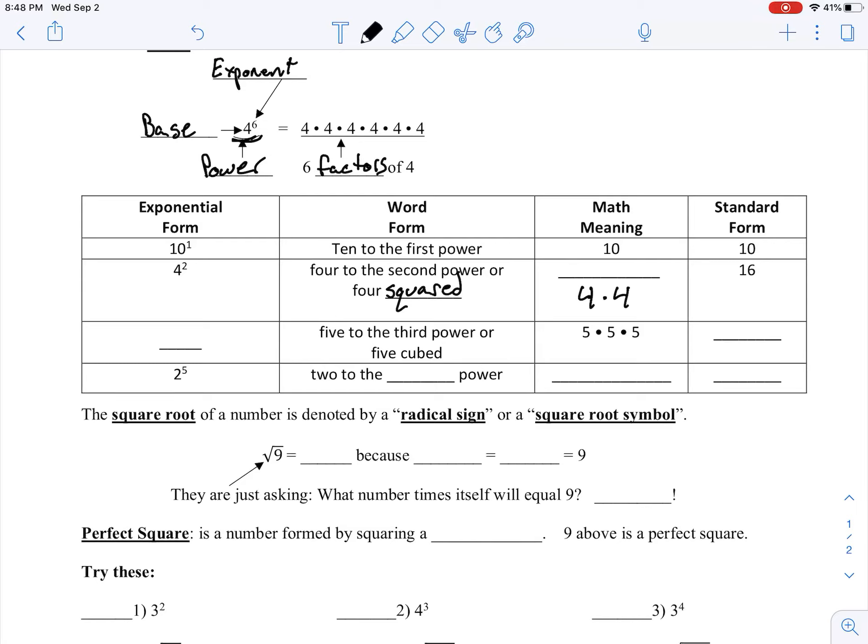So using our other examples, we have here, it tells us 5 to the third power, or 5 cubed. So that means we're going to take our base of 5, and our exponent, since we're taking it to the third power, is going to be 3. Then to get my standard form, all I have to do is multiply that out. So 5 times 5 will give me 25, and then 25 times this final 5 is going to be 125.